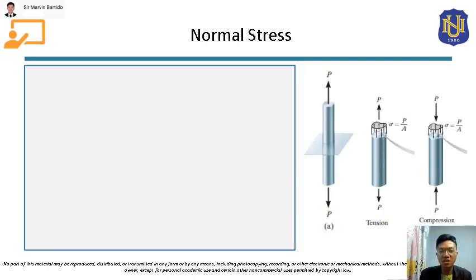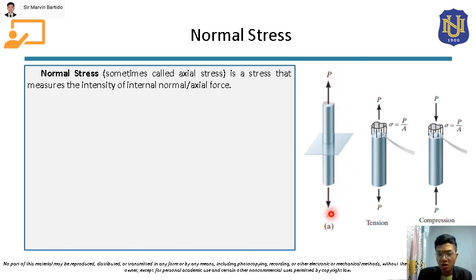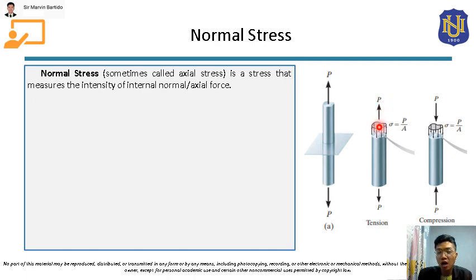Let's discuss the first type of stress, which is normal stress. Normal stress, sometimes called axial stress, is a stress that measures the intensity of internal normal or axial force. If we have a body subjected to force P on both sides and we cut this body through a section, we can see the section where there will be an internal normal force. The intensity of this internal normal force can be measured through the normal stress.